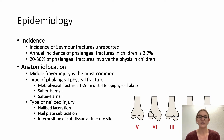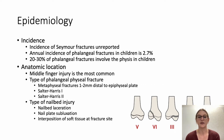In terms of the anatomic location of Seymour fractures, the most common site of injury is the middle finger. There are three types of physis fractures that are recognised: metaphyseal fractures that are 1 to 2 millimetres distal to the epiphyseal plate, and Salter-Harris type 1 and 2 fractures. Finally, you can classify the type of nail bed injury: either a simple nail bed laceration, nail plate subluxation, or interposition of soft tissue at the fracture site.